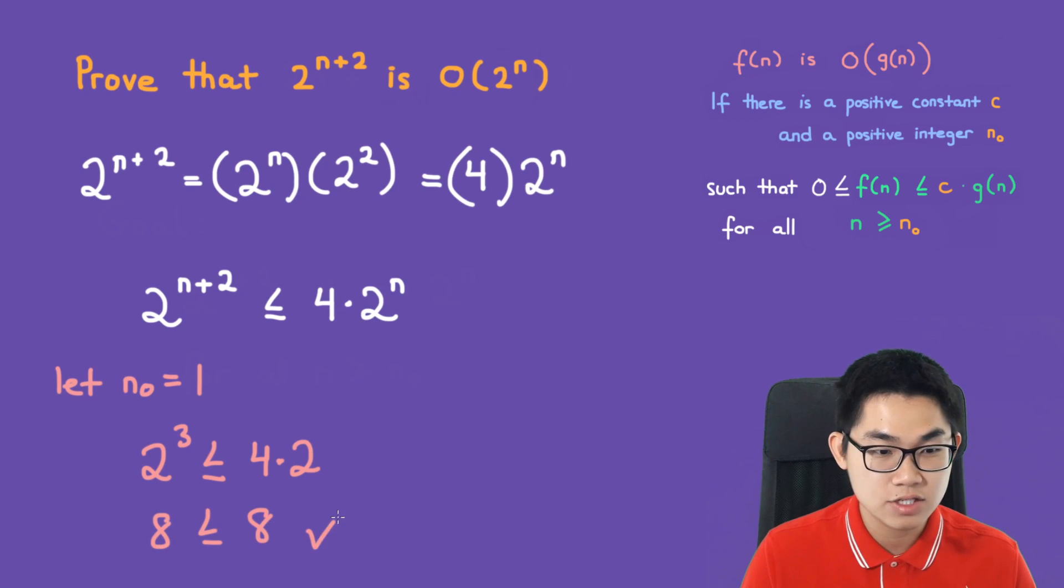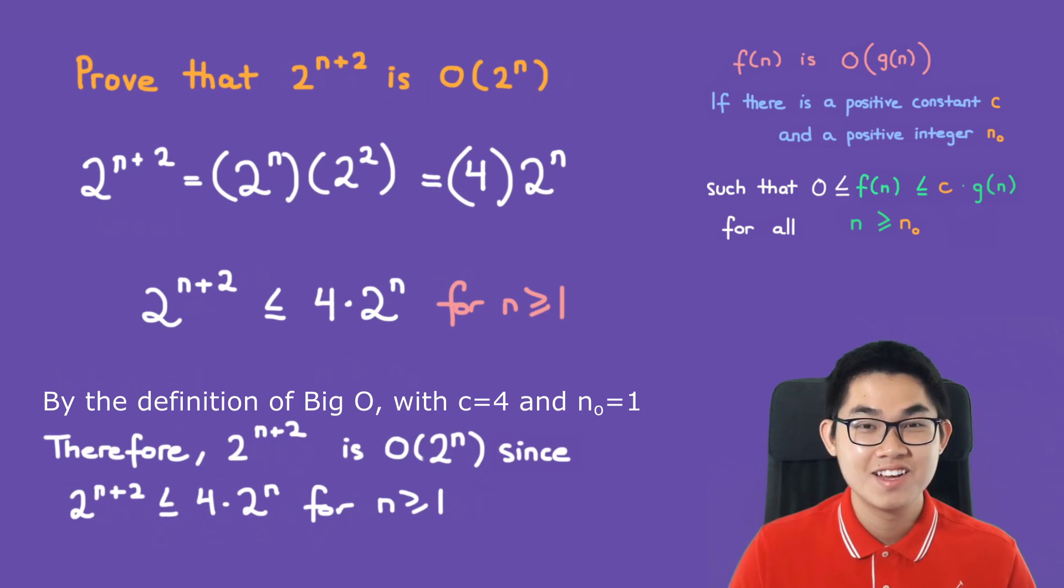Since this is true, this inequality holds for n greater than or equal to 1. Don't forget to write the conclusion. By definition, therefore, 2^(n+2) is O(2^n) since 2^(n+2) is less than or equal to 4·2^n for n greater than or equal to 1.